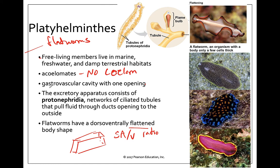Because of their flat shape, flatworms don't need lungs or a circulatory system to transport oxygen around their body. The same applies to the gastrovascular cavity — enough cells come into contact with their stomach cavity that they can absorb nutrients directly into their cells without needing any kind of circulatory system.